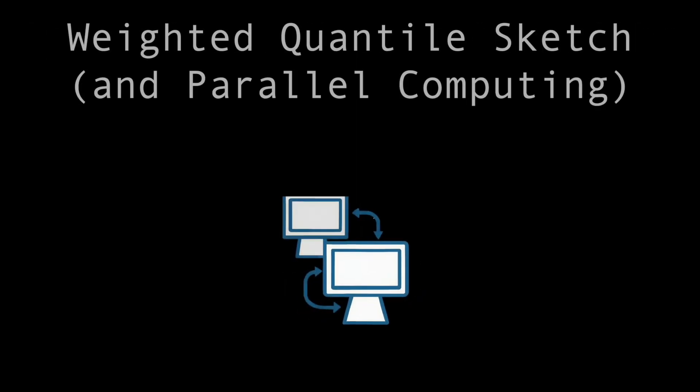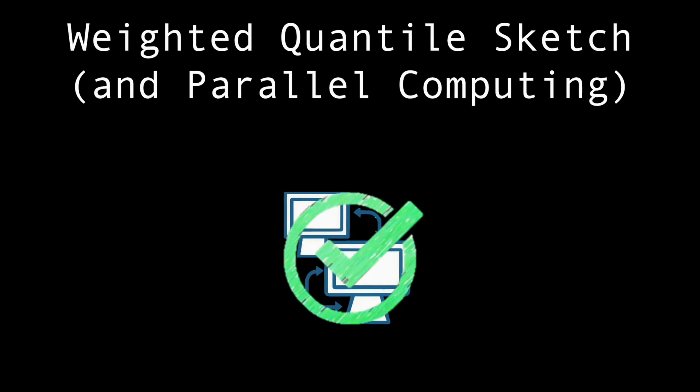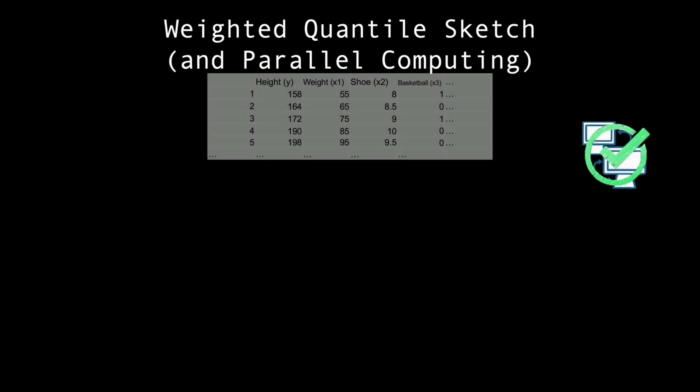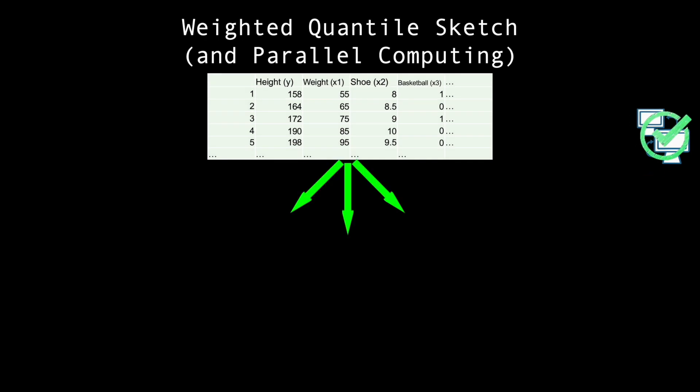XGBoost solves this with the weighted quantile sketch and parallel computing. You break the dataset up by its columns, features, into a collection of datasets.